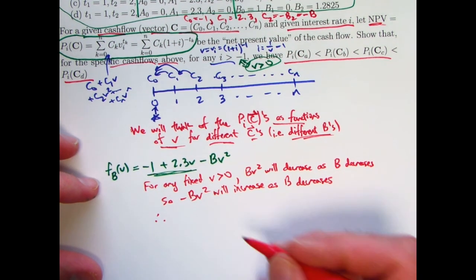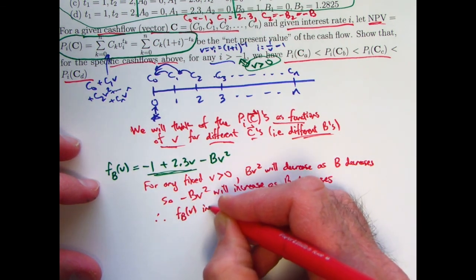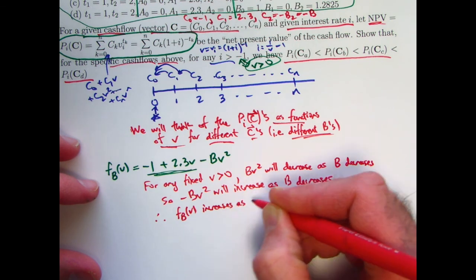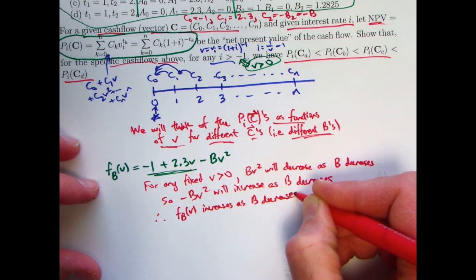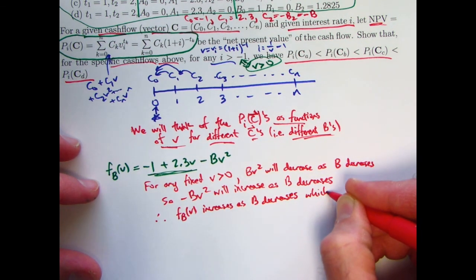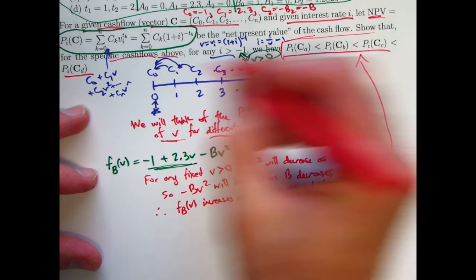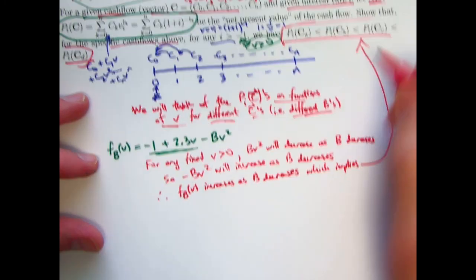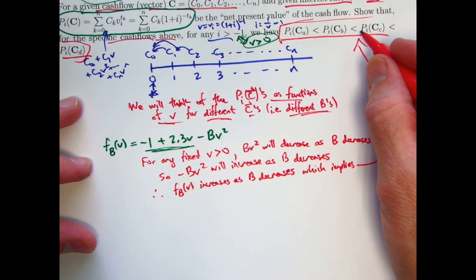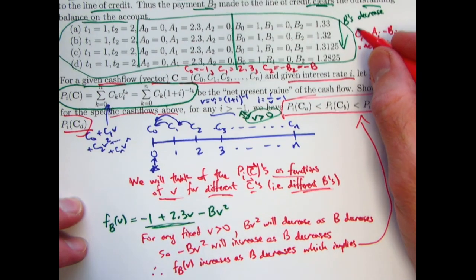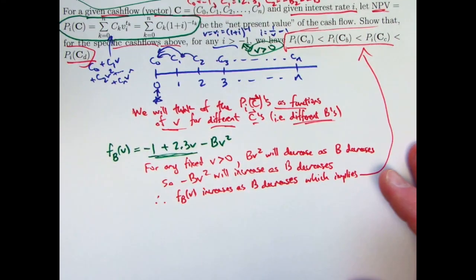Minus BV squared will increase because of the minus sign as B decreases. Therefore, F_B(V) increases as B decreases, which implies what we want, that these inequalities are true. Those P's up there are the same as F_B(V). They're getting bigger as B is decreasing as we go from scenario A to B to C to D. That essentially does it. That solves the problem.